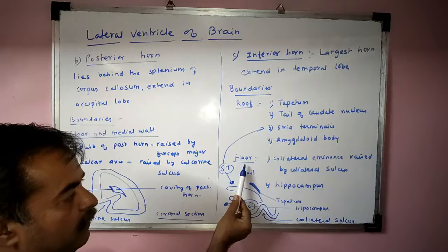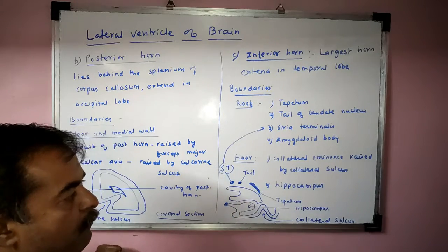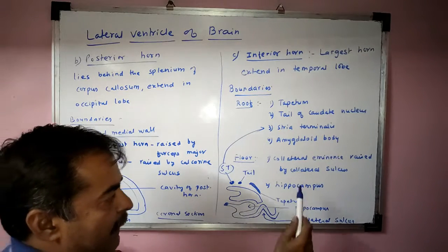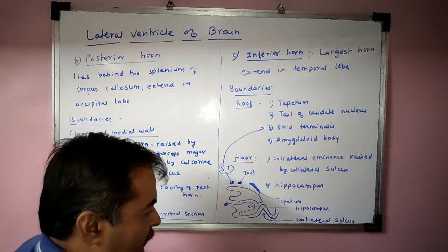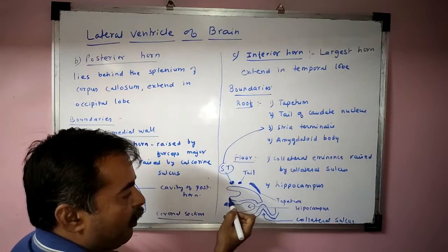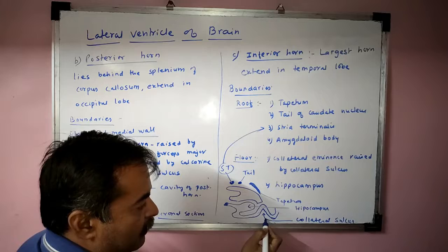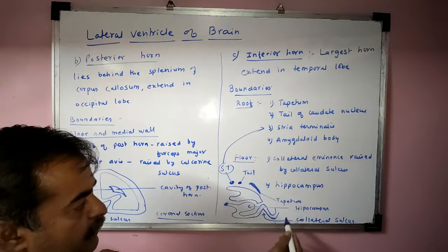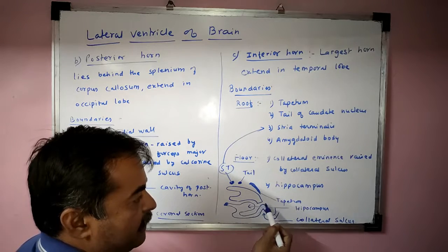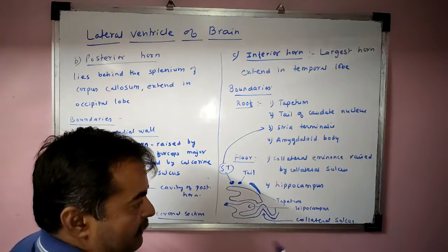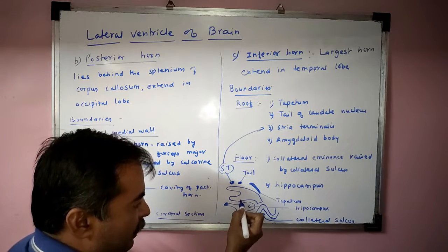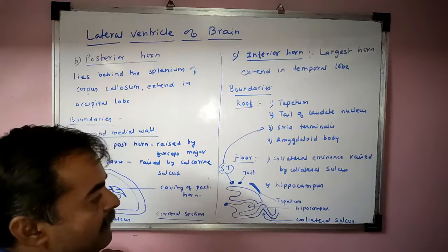The floor of the inferior horn is bounded by the collateral eminence, which is raised by the collateral sulcus, and the hippocampus. The raised part which lies below the inferior horn is called the hippocampus. The collateral eminence is formed by the collateral sulcus and the hippocampus.